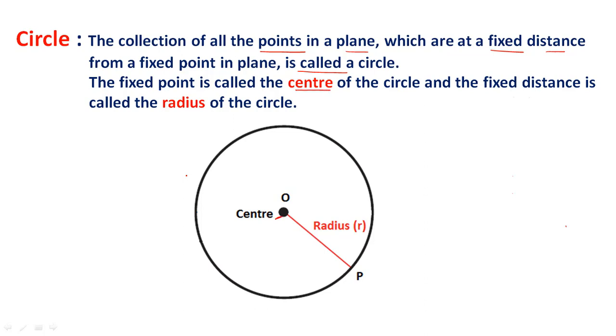The fixed point is called the center of the circle, and the fixed distance is called the radius of the circle. Here OP is the radius.